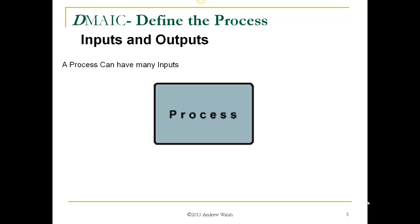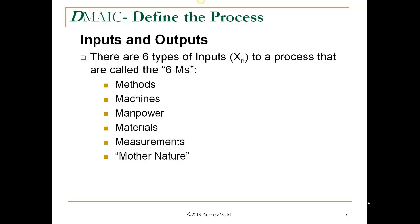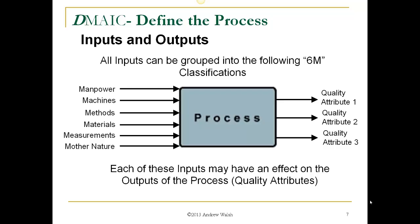A process can have many inputs, and at the same time there can be quite a few outputs. There's a way of describing these inputs in terms of their types, called the 6Ms. These are: methods, machines, manpower, materials, measurements, and Mother Nature. All these inputs can be grouped into these 6M classifications, and each of these inputs may have an effect on the outputs of the process and the quality attributes.